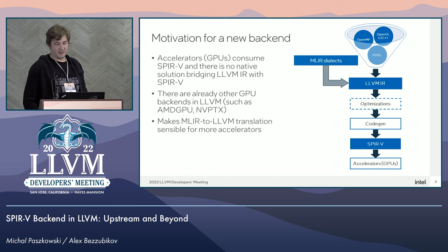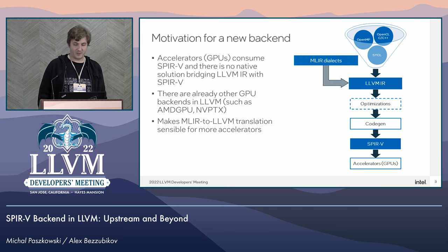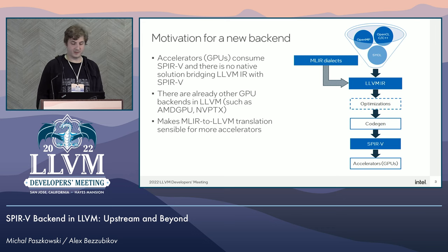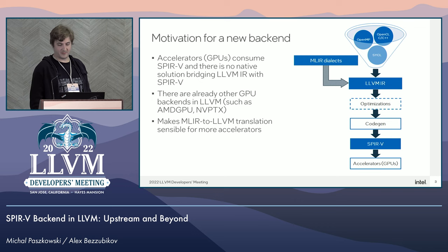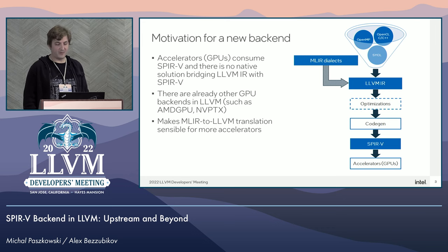Let's talk about why we really need a proper LLVM backend target in SPIR-V. Many accelerators which consume SPIR-V have no native solutions bridging LLVM or IR with SPIR-V, while other accelerators do — for example, AMD and NVIDIA GPUs with their AMDGPU and NVPTX backends respectively. Also, it would make MLIR to LLVM translation sensible for more accelerators, as instead of generating SPIR-V binary directly from SPIR-V dialect of MLIR, it would be possible to generate LLVM IR from MLIR and leverage its whole optimization pipeline while still being able to produce the final SPIR-V binary.